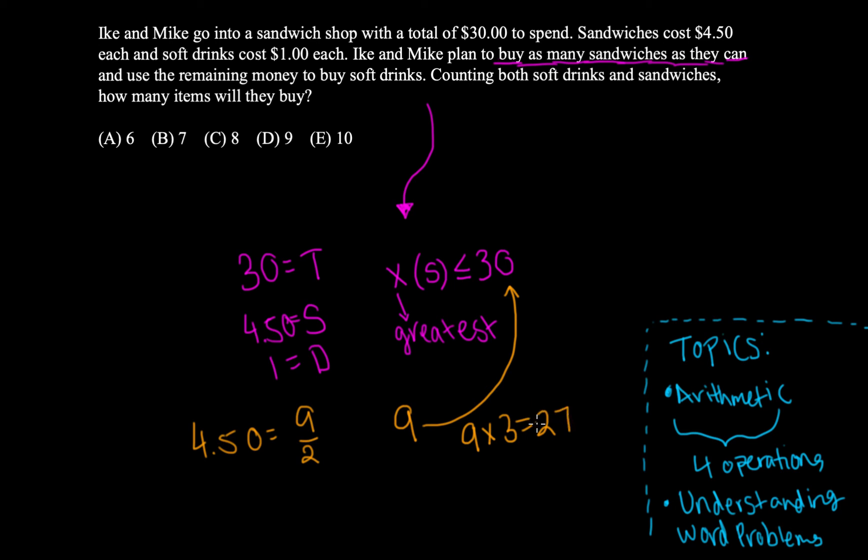And we can see 27 is fairly close to 30, and it is the highest multiple of 9 that is still lower than 30.